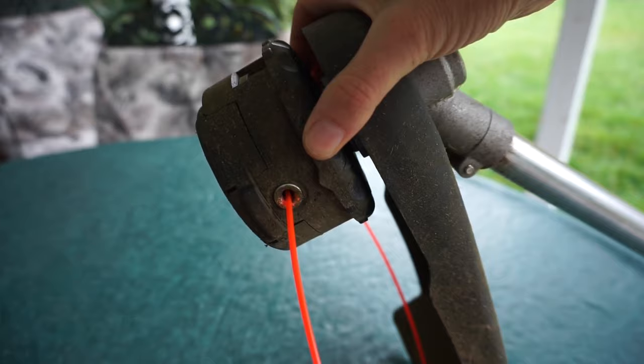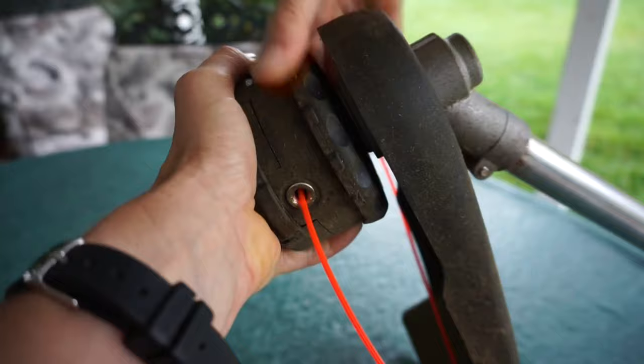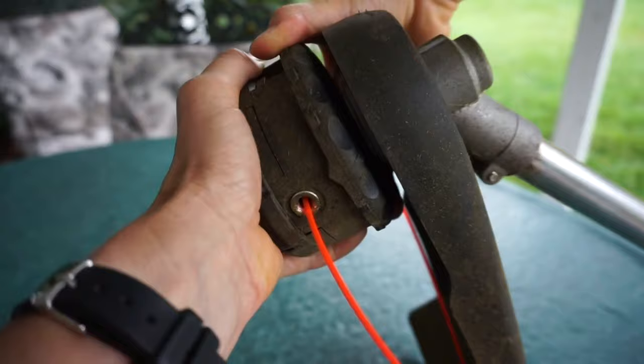Grab onto this part and this top cap and spin the top cap until all of the line is wound into the trimmer's spool. Continue to wind the line in until it's about the length of the cutter.